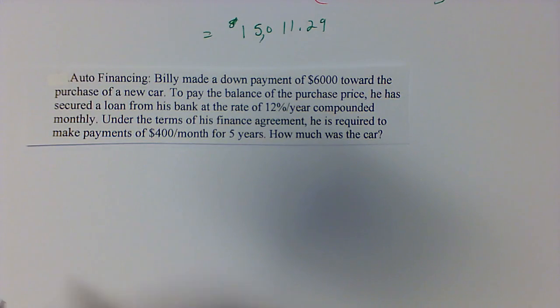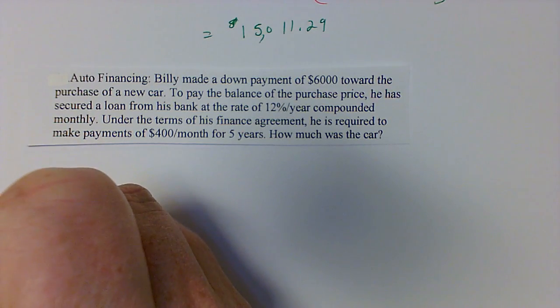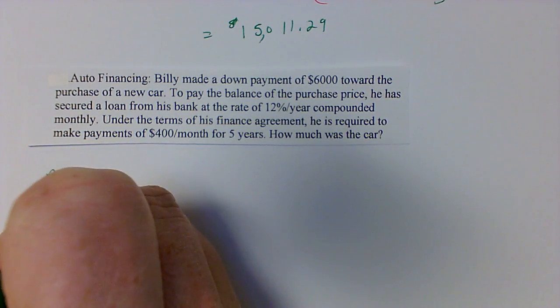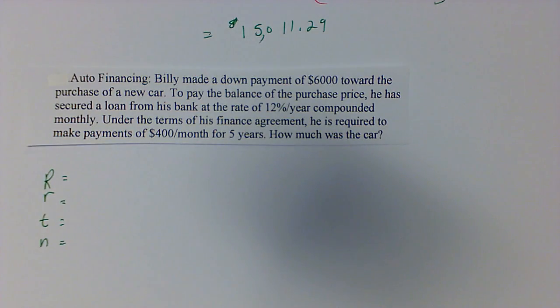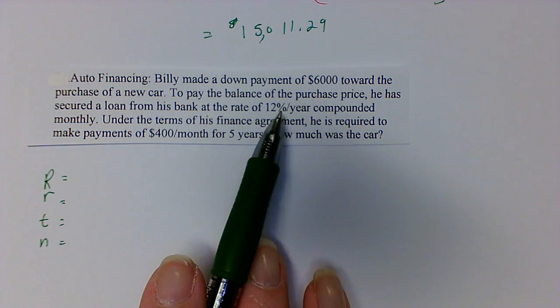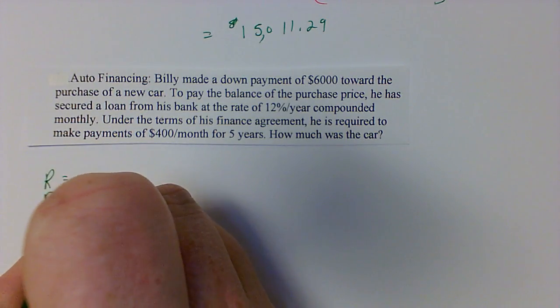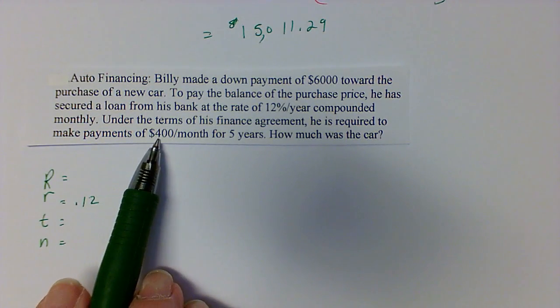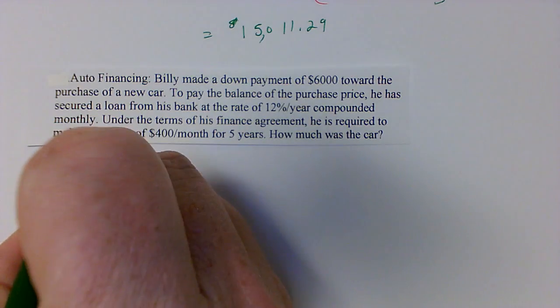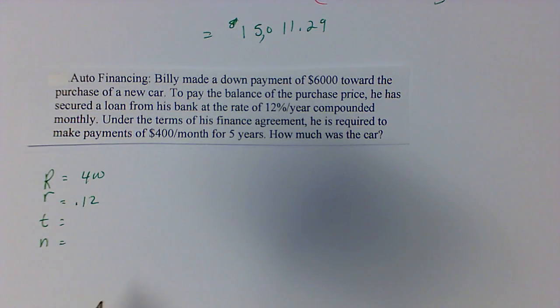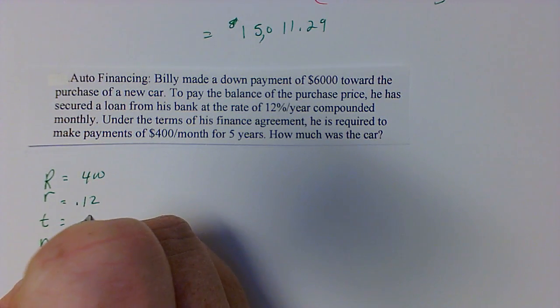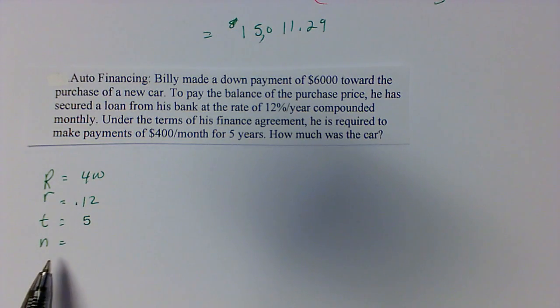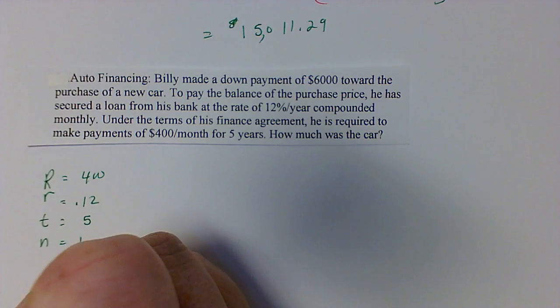So in this we are again using the same formula that we used in the previous problem for present value. We're going to need to know what our R is, what our little r, what our t and our n equal. The little r is 12% or 0.12. Our payments that we're making is $400. Our t is equal to five. We're paying it for five years. And the number of times we're doing this is 12 because we are doing it monthly.